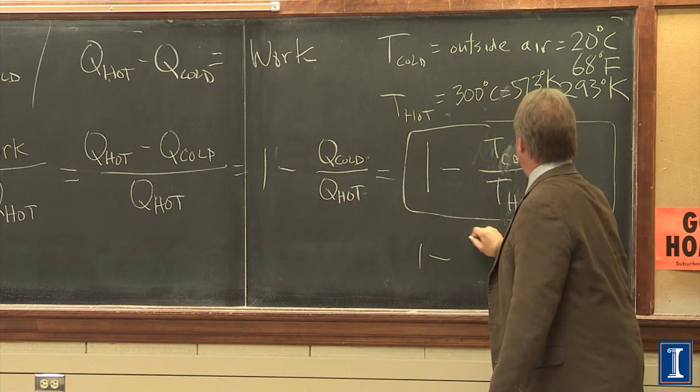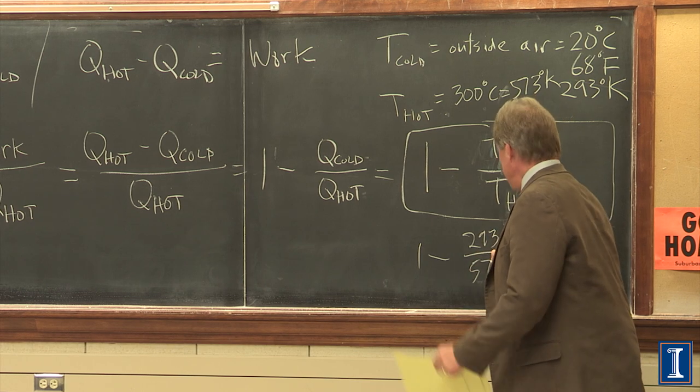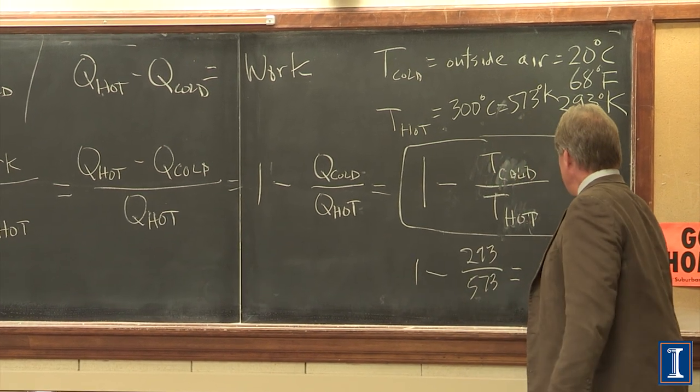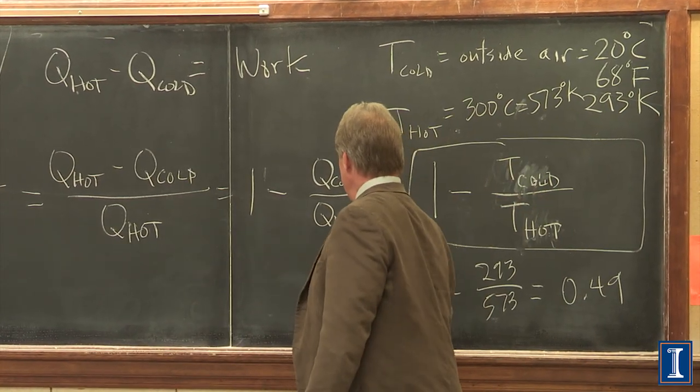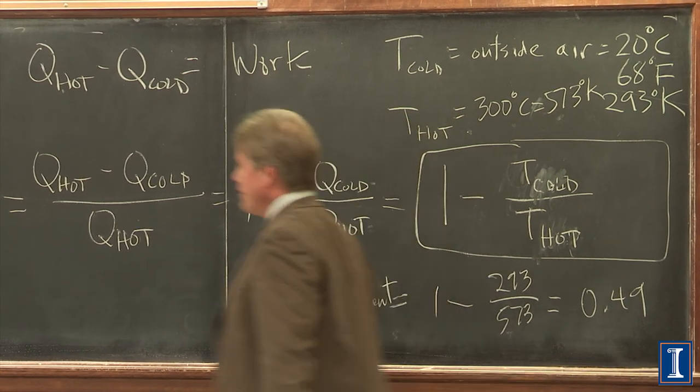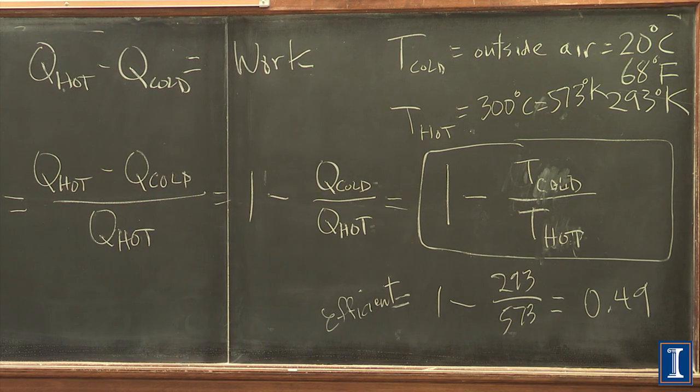Otherwise, you just put in the cold reservoir — maybe that's the outside air for your car — and the hot temperature, which is the temperature at which the fuel and gases are combusted, and you can put those numbers in to get an efficiency. If we plug in those actual numbers, we'll get something probably a bit less than 50%. That's the maximum efficiency we can probably get a car engine to work at. Of course, a real car engine is not an idealized perfect cycle — it has a lot of imperfections: friction, wasted heat. That's why it's more likely in the 20 to 25% efficiency at best.